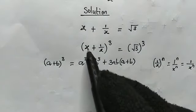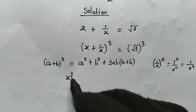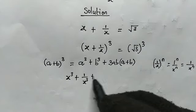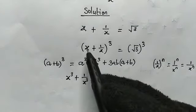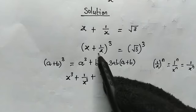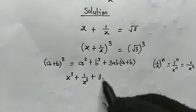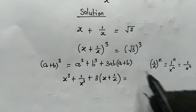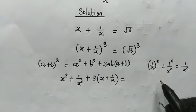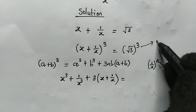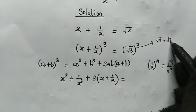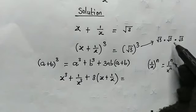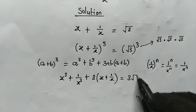From the left-hand side, applying the property, the first term cubed is x cubed, plus the second term cubed is 1 over x cubed, plus 3 times x times 1 over x — and x times 1 over x is 1, so 3 times 1 is just 3 — times bracket x plus 1 over x. On the right-hand side, root 3 cubed equals root 3 times root 3 times root 3, which is 3 root 3.